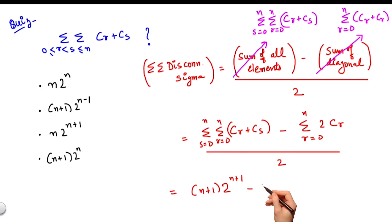And this summation would be nothing but 2 times 2 to the power n which is nothing but 2 to the power n plus 1 whole divided by 2.